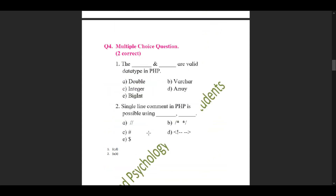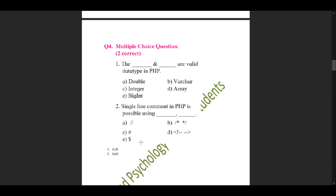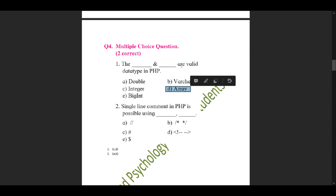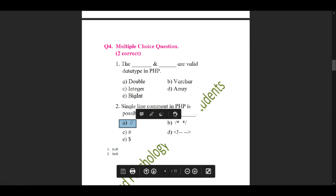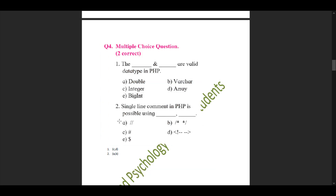We move forward to question 4: multiple choice questions where there will be two correct options for every MCQ. First MCQ: the dash and dash are valid data types in PHP. The answer is integer and array — options C and D. Second MCQ: single-line comments in PHP are possible using two slashes and hash — options A and B are correct.